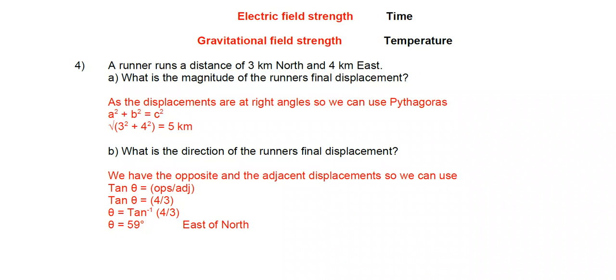You only have to really deal with vectors at right angles at GCSE. As the displacements are at right angles, we can simply use Pythagoras. A squared plus B squared equals C squared. So if we just do the root of 3 squared plus 4 squared, we get 5 kilometers.